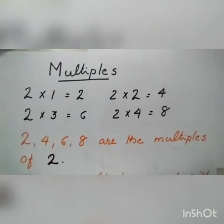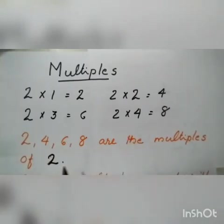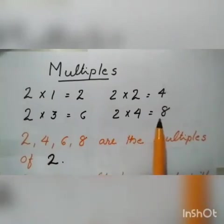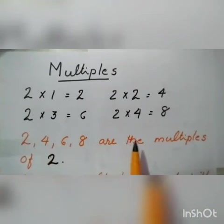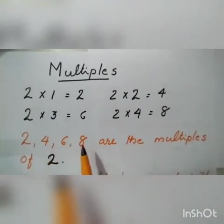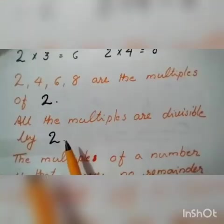What is a multiple? One example is here. Two ones are two, two twos are four, two threes are six, two fours are eight. Here, two, four, six, eight are the multiples of two.